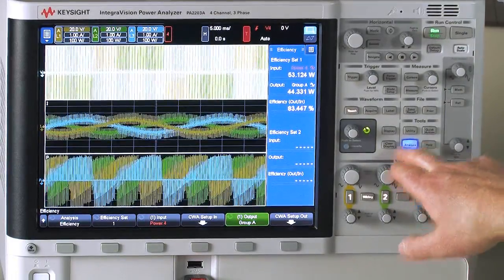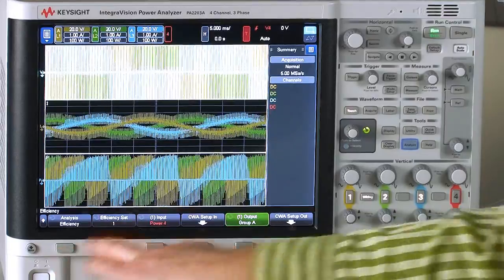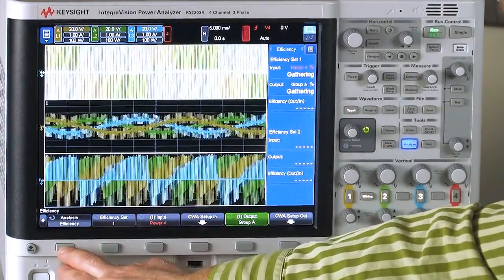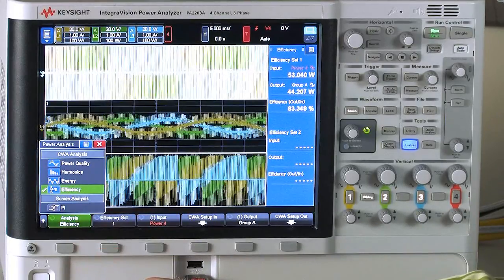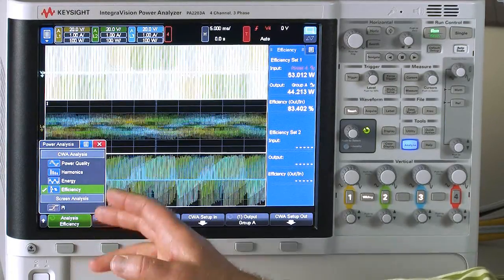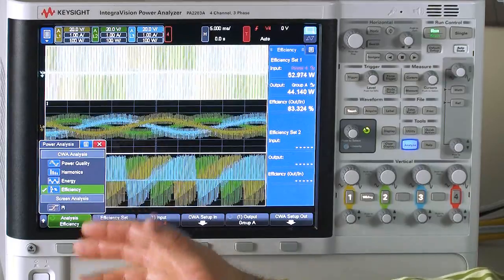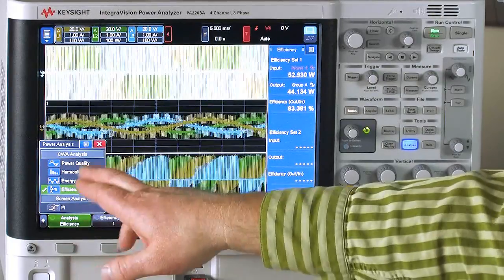Other measures that we could do are we could look at energy over time. We could look at the harmonics on the waveforms. So we have multiple power quality types of measurements that you could do on this VFD.